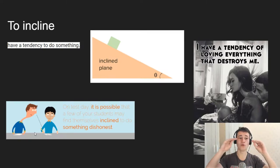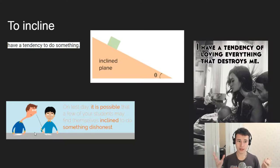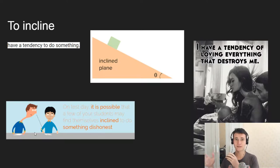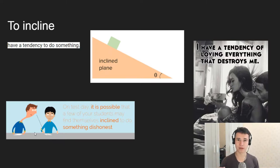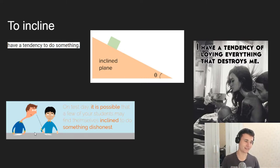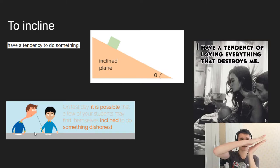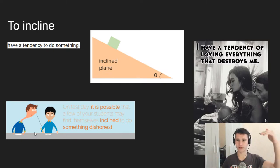First word is 'to incline.' Incline means to have a tendency to do something. Maybe you have a tendency to spy on somebody, or maybe you have a tendency to do the same thing daily. For example, you wake up at the same time, maybe at 7 a.m. — that is your inclined tendency. Also, we have 'inclined' like a plane, because a plane has a tendency to go maybe downward.